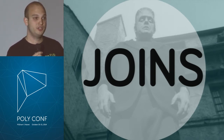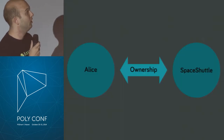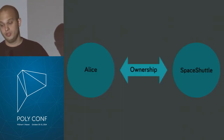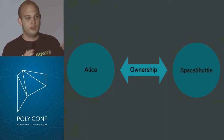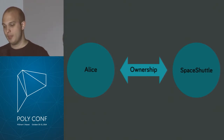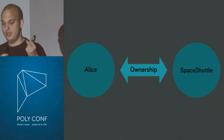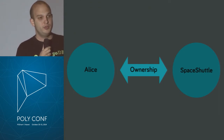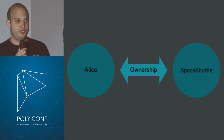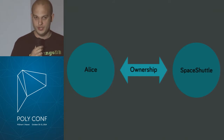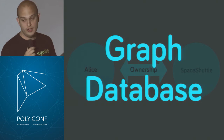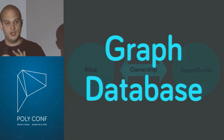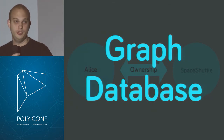There's a different way to approach what joins do: drawing a graph. This is quite close to what a domain expert might draw on a piece of paper — you have Alice, you have the space shuttle, and you draw an arrow between them representing ownership. If you can do that in your database, then your database is probably a graph database. In a graph database, you can express and query this exactly that way.